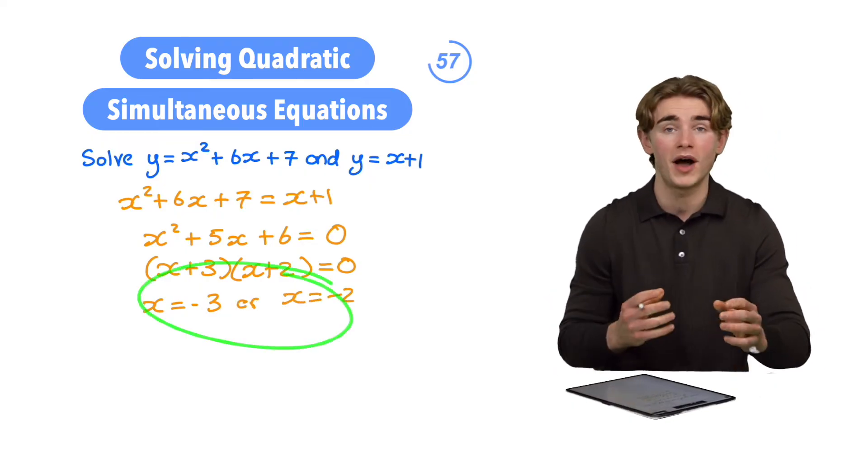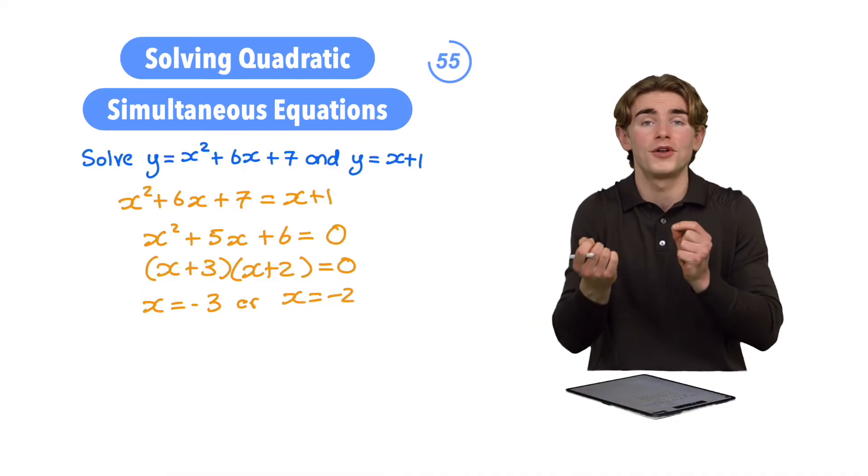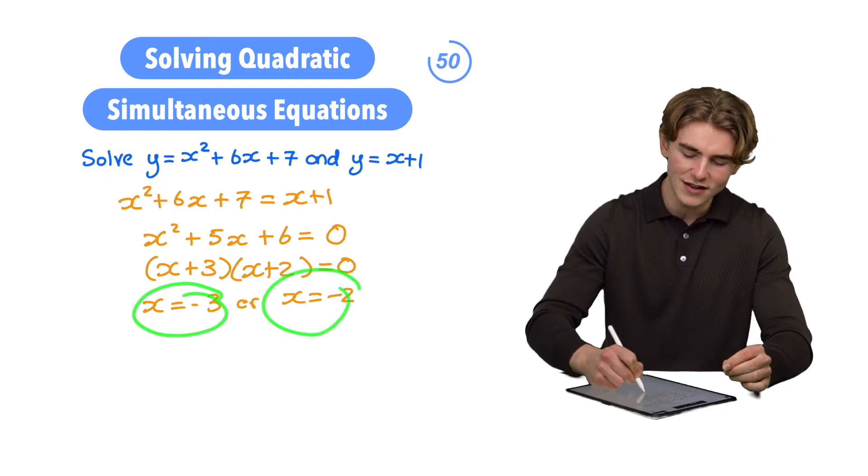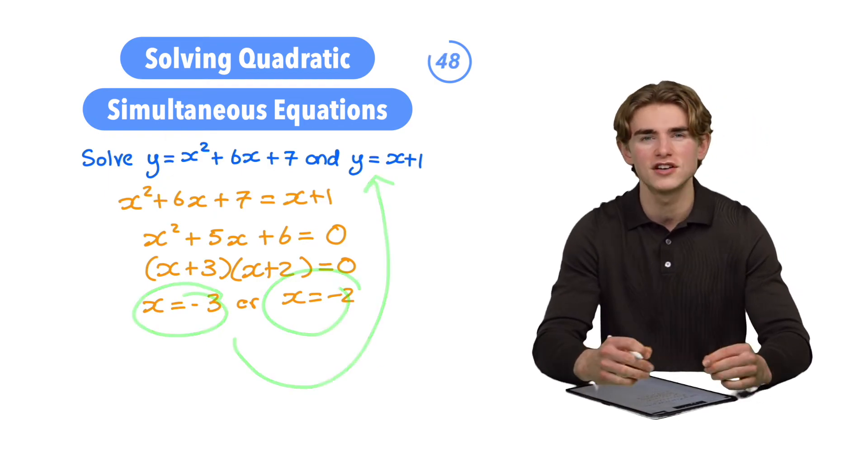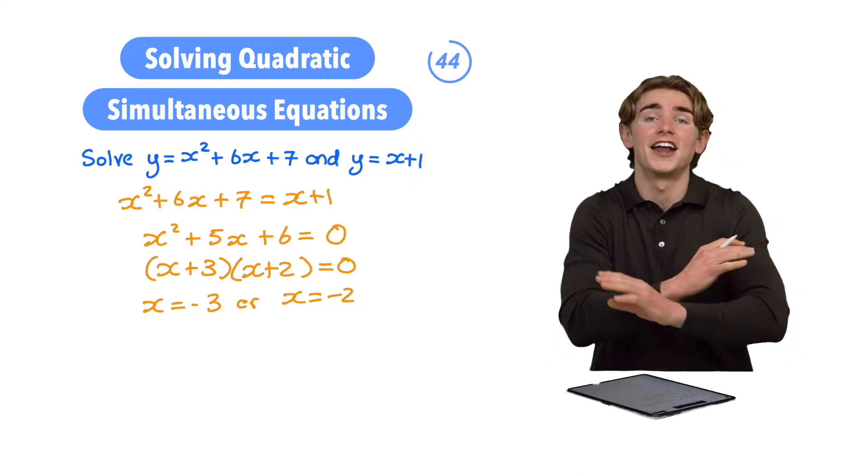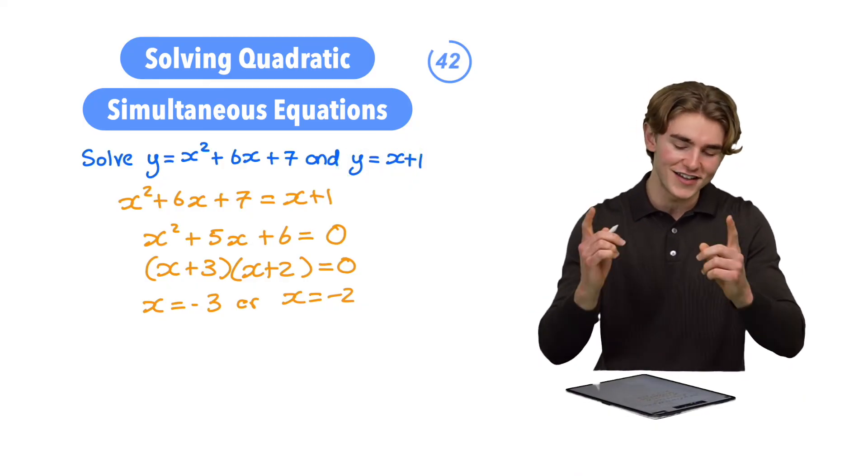Now, we haven't actually finished because we haven't found our corresponding values for y. So how are we going to do that? We're going to substitute each of our values of x into one of our original equations. We're going to choose y = x + 1 because that one's going to be the easiest, and that will give us our final answers. Let's get it done.